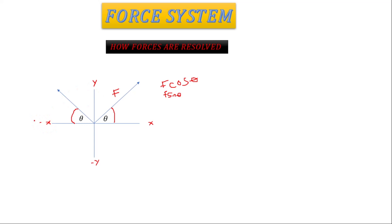Moving to the third quadrant — the x is negative and the y is also negative, so everything will be negative. When resolving, the x component gives negative F cos θ, and the y component gives negative F sin θ.